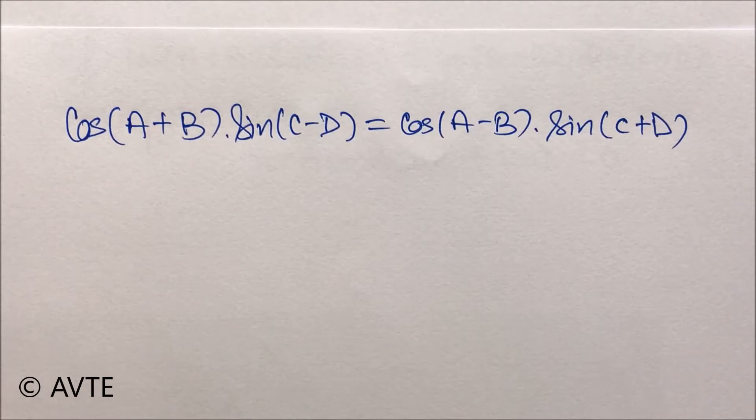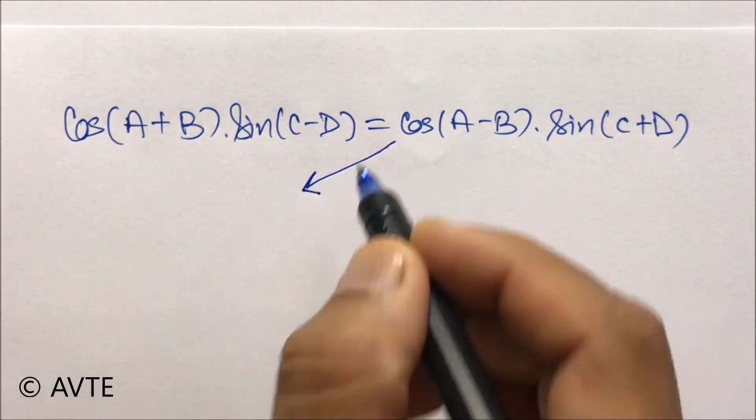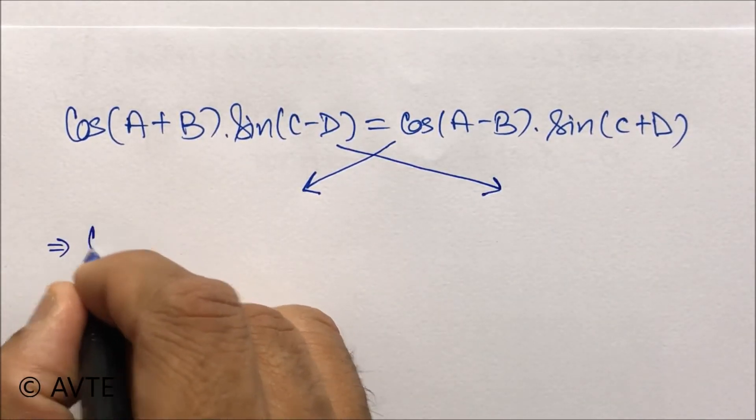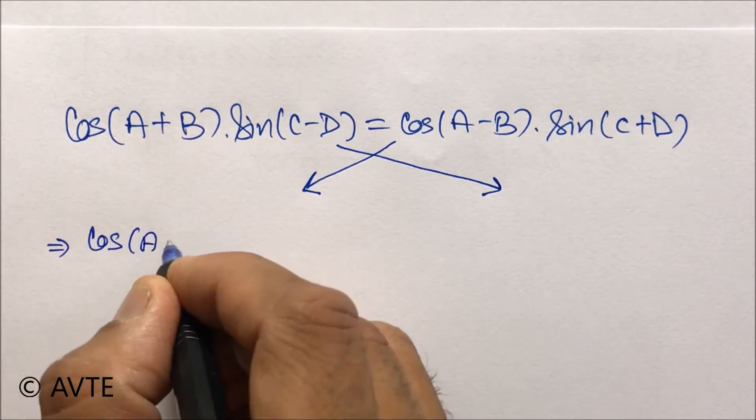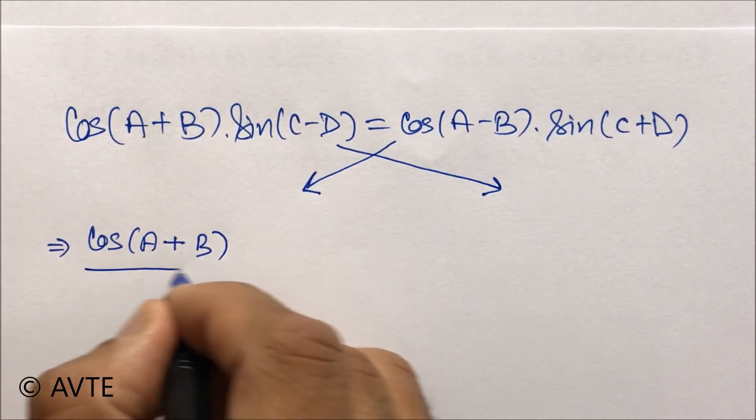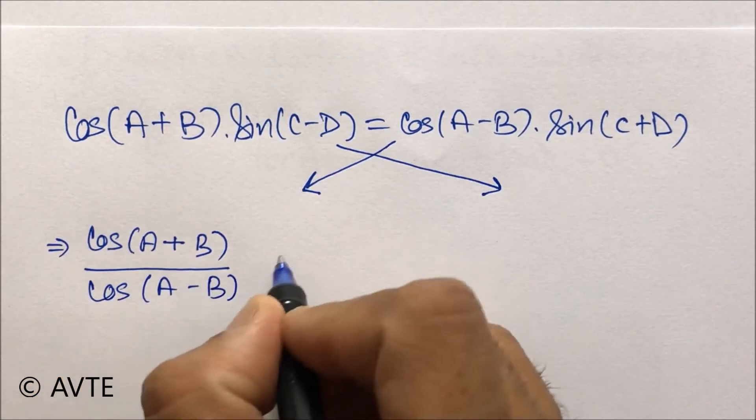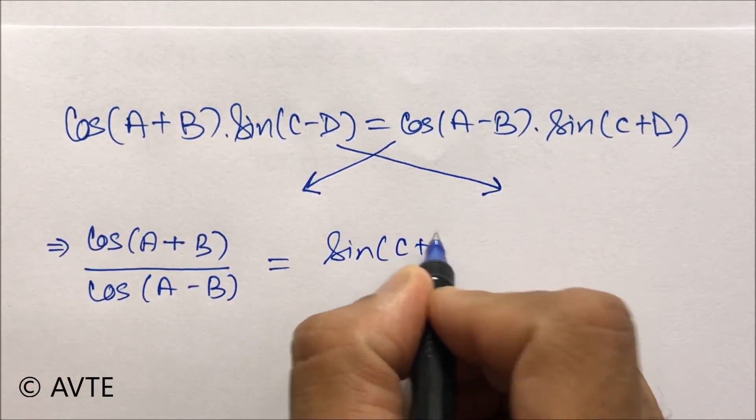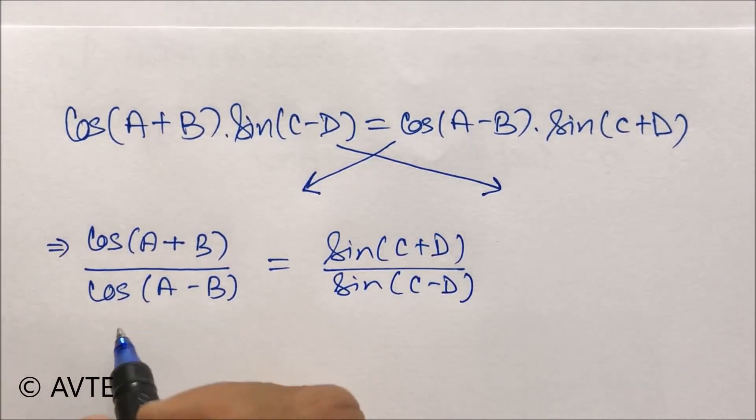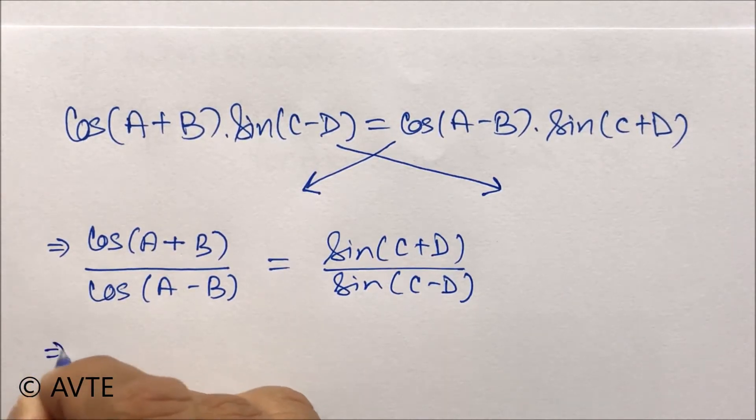See carefully the given condition and now you have to do smart work. Bring cos to one side and sine to the other side. That way you will be able to get cos(A + B)/cos(A - B) and sin(C + D)/sin(C - D), and if you apply componendo and dividendo then...